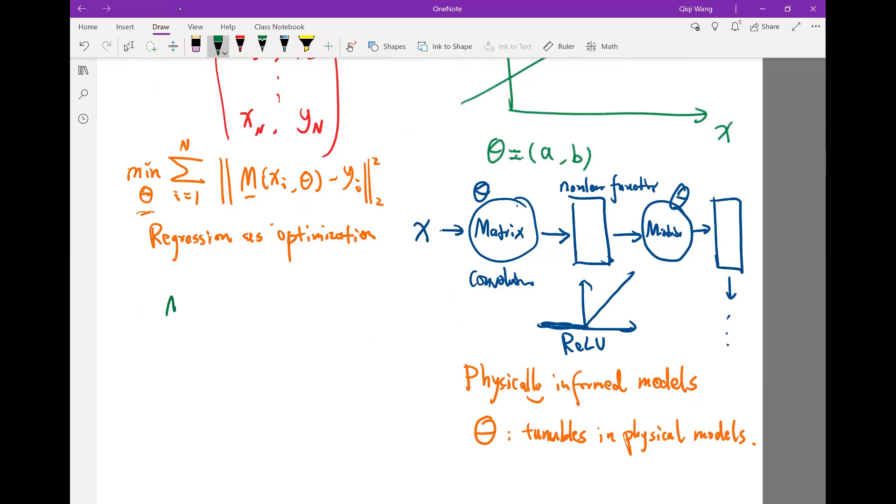So my model of X and theta for the classification case is usually a set of probabilities, P1, P2, up to Pk. If I have k different categories, I can choose in the output. For example, if an image can be classified into the numbers between 0 and 9, then for every image, I want to produce 10 different probabilities that add to 1, saying how confident the model is that this image represents a particular number.